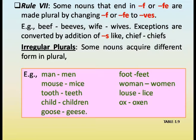Irregular plurals. Some nouns acquire different forms in plural: man — men, foot — feet, mouse — mice, woman — women, tooth — teeth, louse — lice, child — children, ox — oxen, goose — geese.